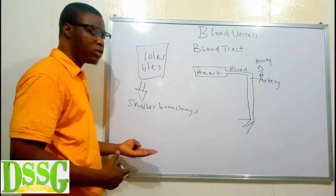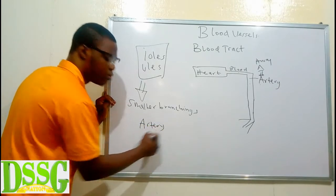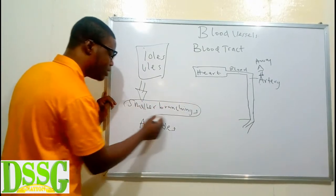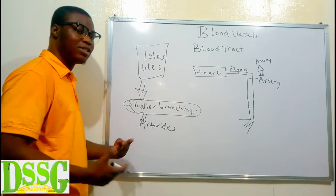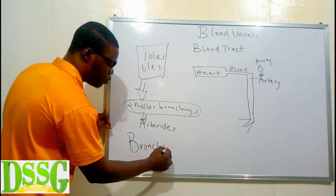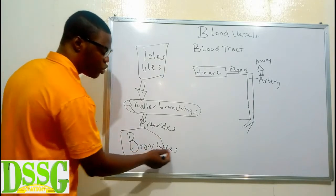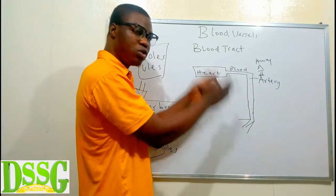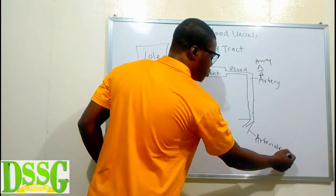Smaller branches of what? Smaller branches of the preceding word. For example, if you have a tree, remove the 'y' and add '-oles' — it means smaller branches of a tree. So arterioles are the smaller branches of arteries. Another example: in the respiratory system, we have a structure called the bronchi. When you say bronchioles, it means the smaller branches of the bronchi. So arteries give rise to smaller branches called arterioles.